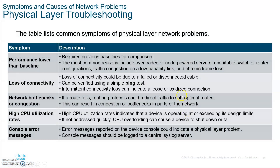Take a snapshot of this table of symptoms at the physical layer. If you have performance lower than the baseline — very slow access, loss of connectivity, cable issues, interface problems — it could be the interface or the cable. Also watch for network bottlenecking or congestion, high CPU utilization rates, and console error messages. All of that is something you may suspect at the physical layer.